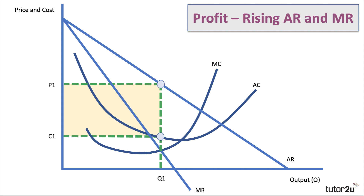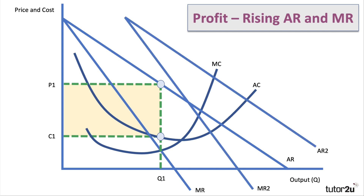So what happens if demand goes up? There'll be a shift in the demand curve, but crucially — something students often miss — the marginal revenue curve will also shift out as well. So don't forget to draw a shift in both AR and MR. Everything else is held constant; we haven't changed our cost curves at all. We're now looking for the new profit-maximizing output, which will be at Q2 — that's where marginal revenue cuts marginal cost.